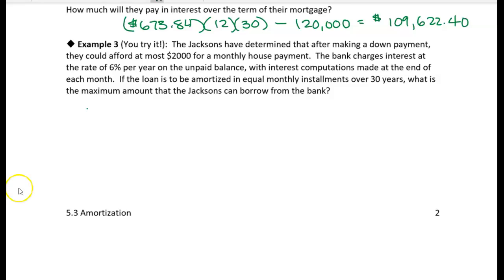In this example, the Jacksons have determined that they can afford a $2,000 monthly house payment. So now we know R. We're given the monthly payment. R is equal to $2,000. That's how much they think they could afford.